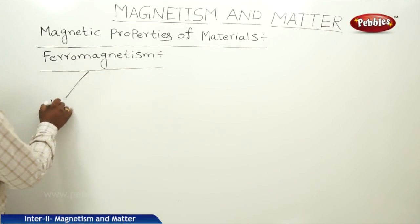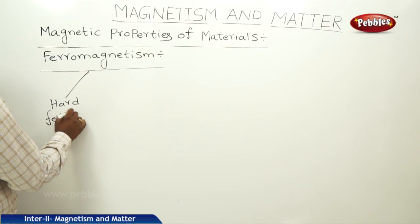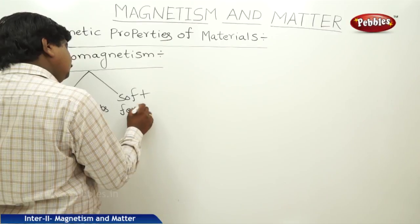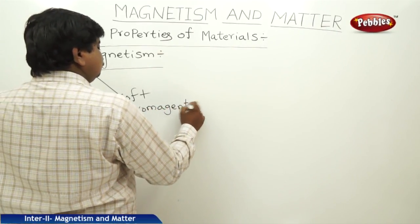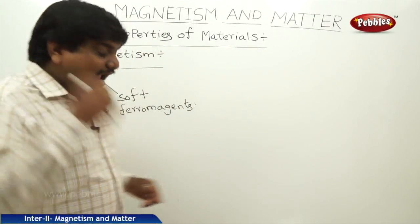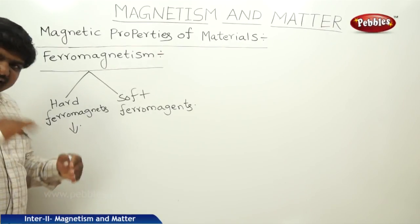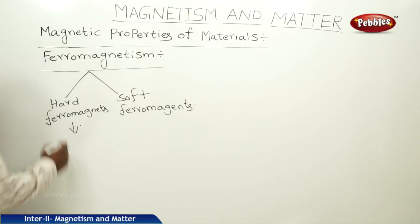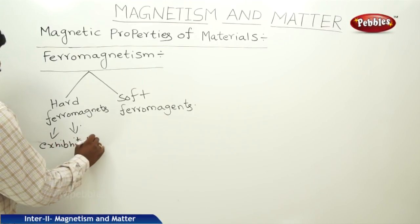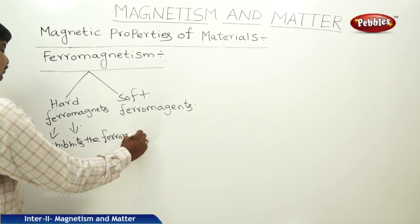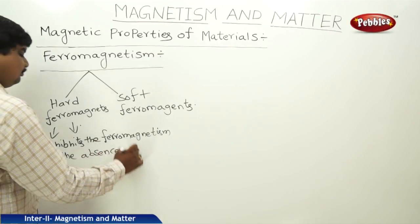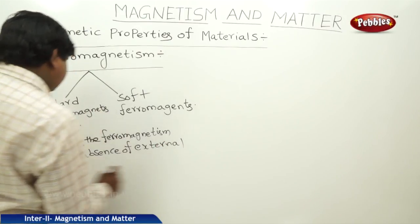Ferromagnets are classified into two types: hard ferromagnets and soft ferromagnets. Hard ferromagnets are those in which, if you remove the external magnetic field, the magnetism will still persist — meaning it will exist for a long time in the absence of the external field. Hard ferromagnets exhibit ferromagnetism even in the absence of an external magnetic field.